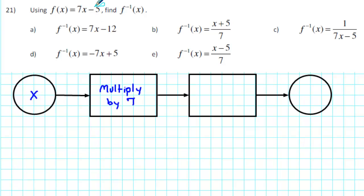After we multiply by 7, we need to subtract 5 from the result. Once we've subtracted 5, we get our output, which is represented by f of x.